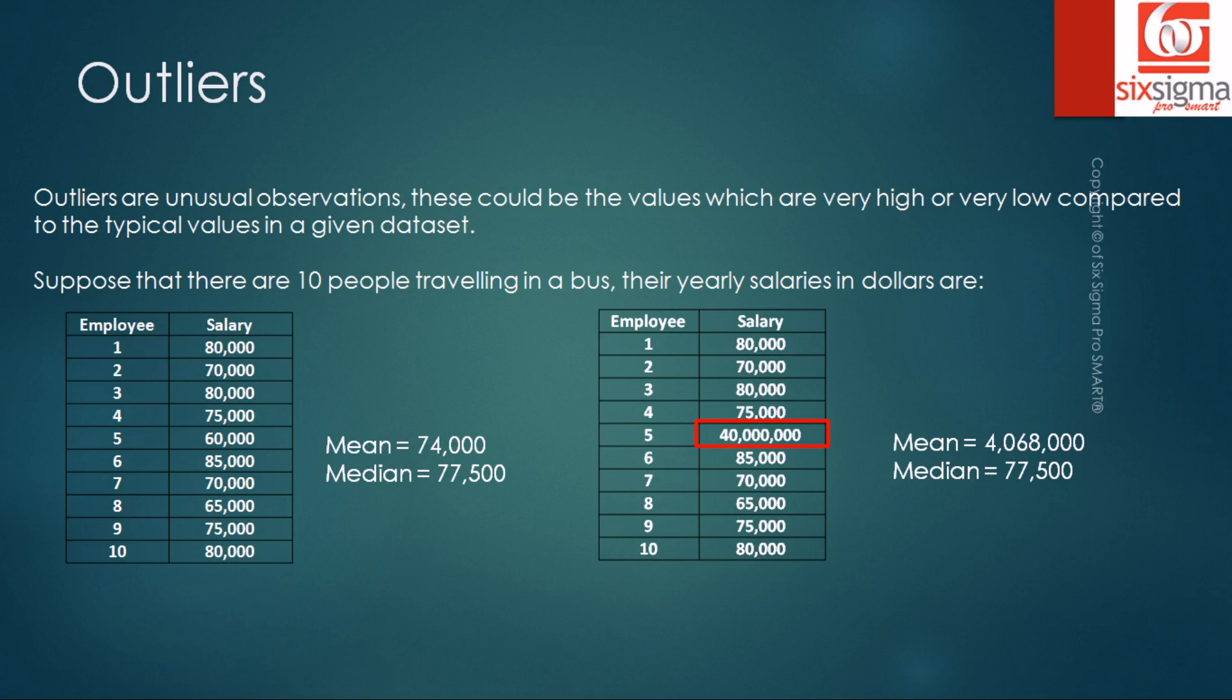Whereas, if you notice, the median in this case remains completely unaffected. Why? Because the median is not influenced by the values. It is a measure of position. Therefore, a very important takeaway for us here is that whenever our data has outliers, we cannot use mean as a measure of central tendency.